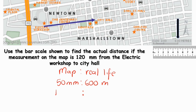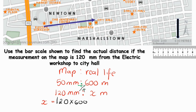Then we will have 120, which is what we measured, and that will be X meters — that's what we need to find out. I go for my cross multiplication, which I call the seventh method. I'm going to say 120 multiplied by 600, and then divide by 50. The black part means multiplication and the green part is division. So X is equal to 120 times 600, divided by 50.